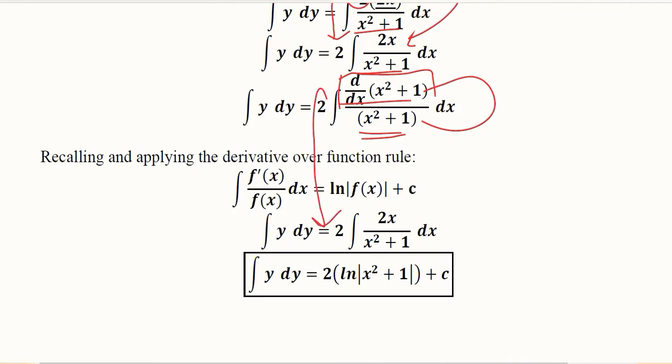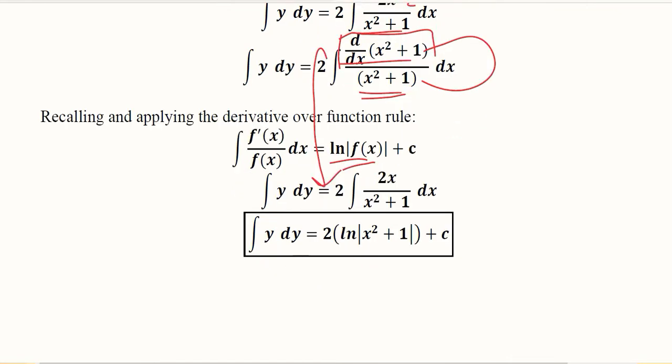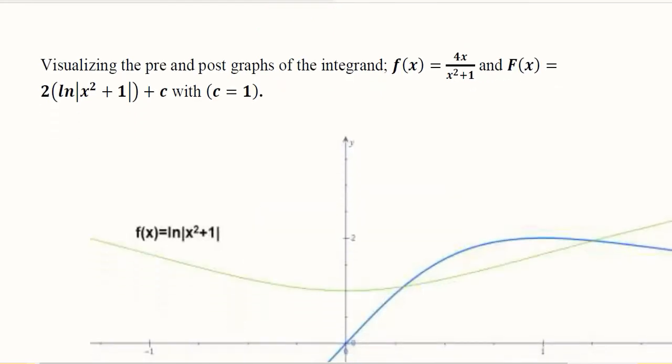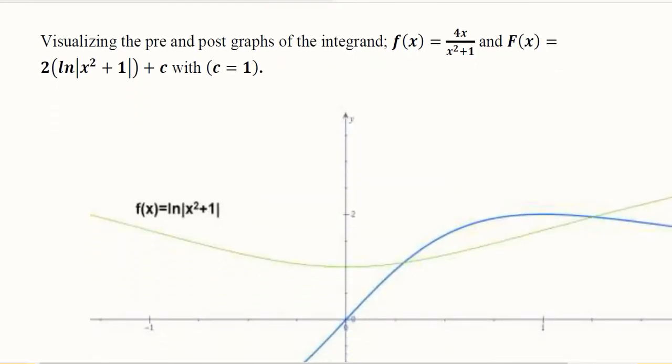This 2 will remain outside, and natural log will appear. As you can see, natural log of the denominator or the function, and 2 remains there as it was. This is how we have solved a function where derivative over function situation was prevailing, and now we can plot it.